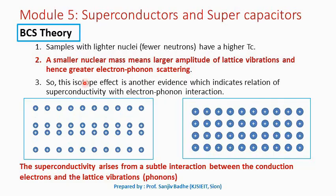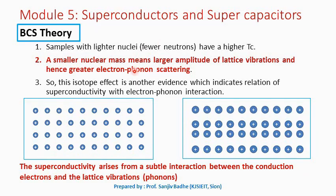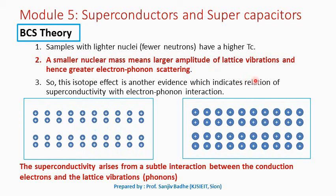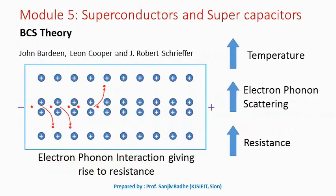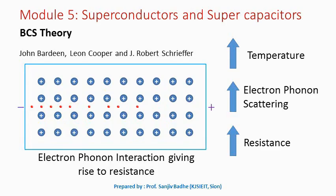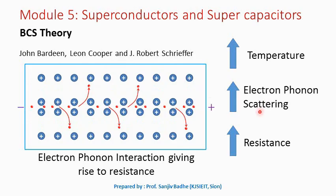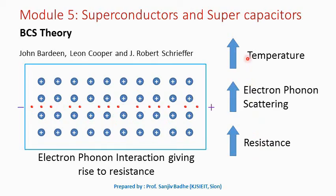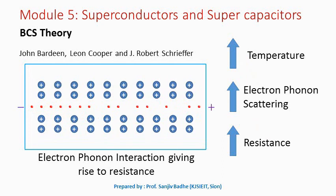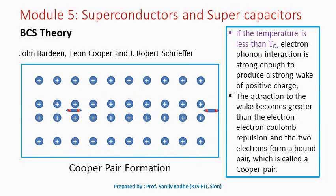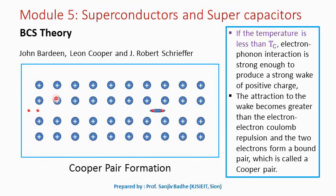So, greater the electron-phonon scattering, more is the chance of the material getting transformed into the superconducting state. According to Bardeen, Cooper, and Schrieffer, electron-phonon interaction has something to do with superconductivity. As temperature increases, due to increased amplitude of lattice vibrations, the electron-phonon scattering also increases and that leads to an increase in resistance. Now, when we reduce the temperature below the critical temperature, the thermal energy associated with the lattice vibrations will be very small and as a result, the amplitude of vibrations will also be small.